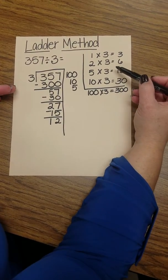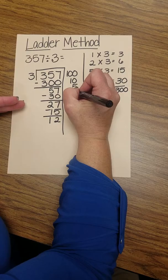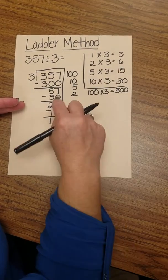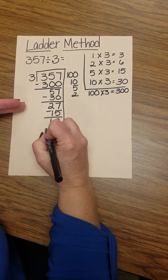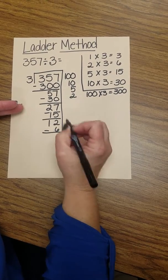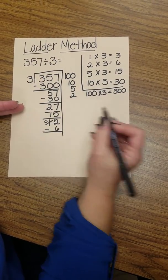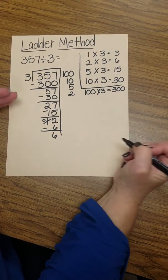So I cannot use the 5 again, so I'll use the 2. And 2 times 3 gives me 6. So I'll subtract 6. 12 minus 6 leaves me with 6.